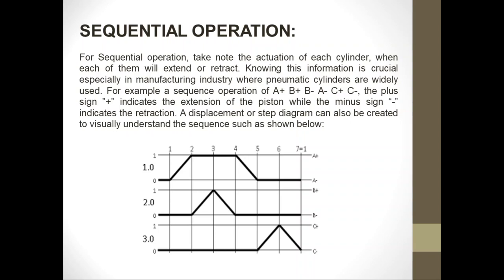The displacement-step diagram — sometimes called a step diagram or displacement diagram — shows three cylinders: cylinder 1, cylinder 2, and cylinder 3. In the sequential operation, the term 'plus' denotes that the cylinder has extended, and the term 'minus' denotes retraction. Initially, at the starting point, all three cylinders are in retracted mode.